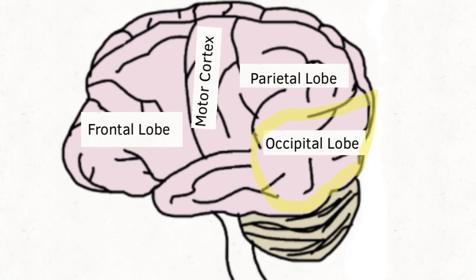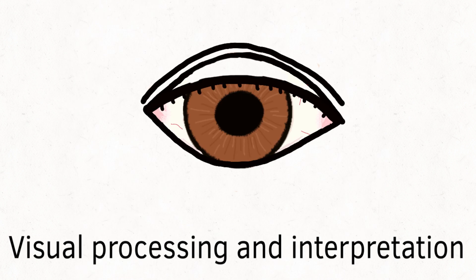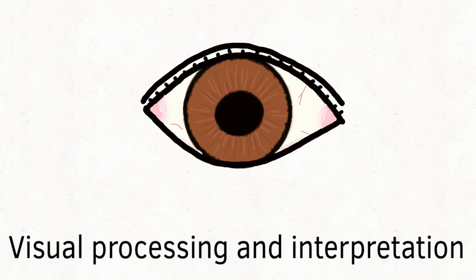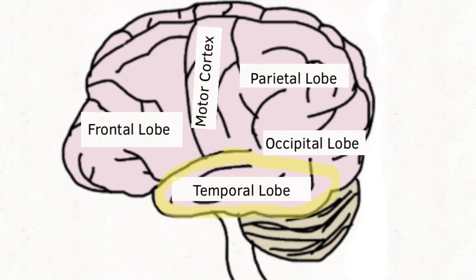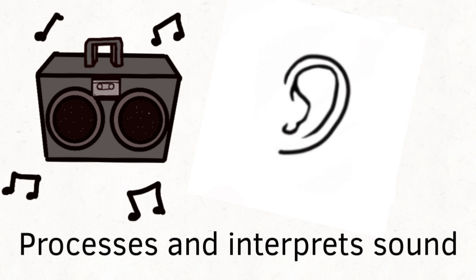The occipital lobe processes and interprets what we see. The temporal lobe processes and interprets sound.